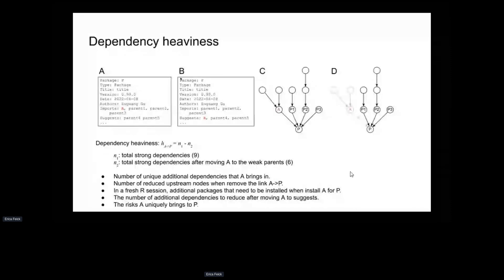A new metric called dependency heaviness is introduced. Consider two description files A and B and their corresponding upstream dependency graphs for package P. In figure A, the original dependency graph has nine upstream dependencies. If we can convert A from a strong dependency to a weak dependency, the relation between A and P is removed from the graph. The reduced number of strong dependencies is called the dependency heaviness, which measures the unique additional dependencies that A contributes to P.